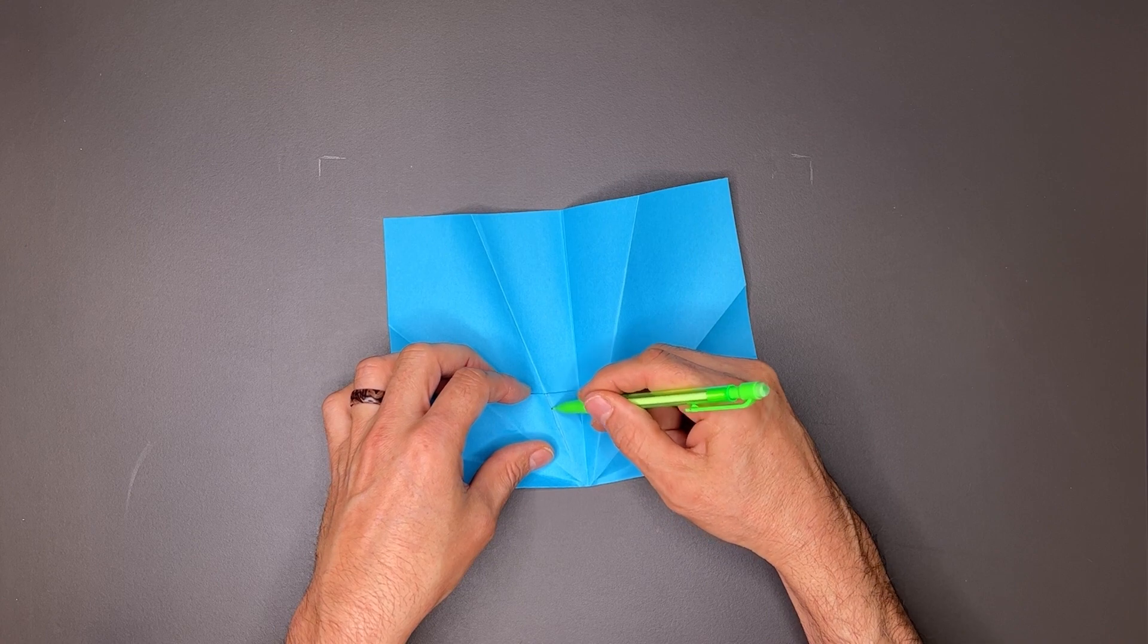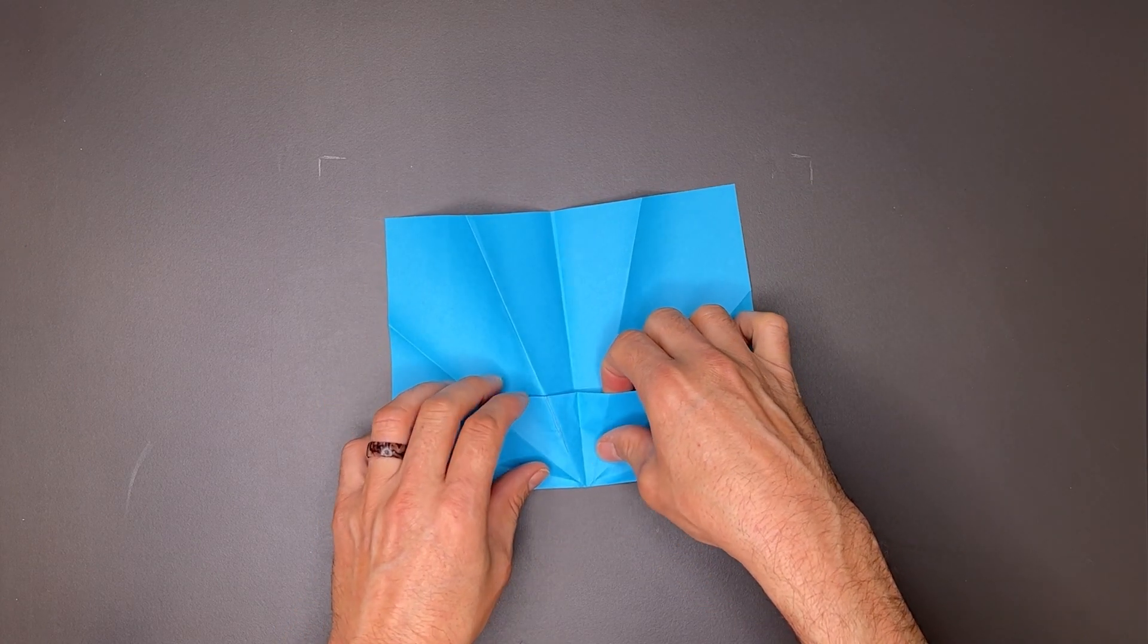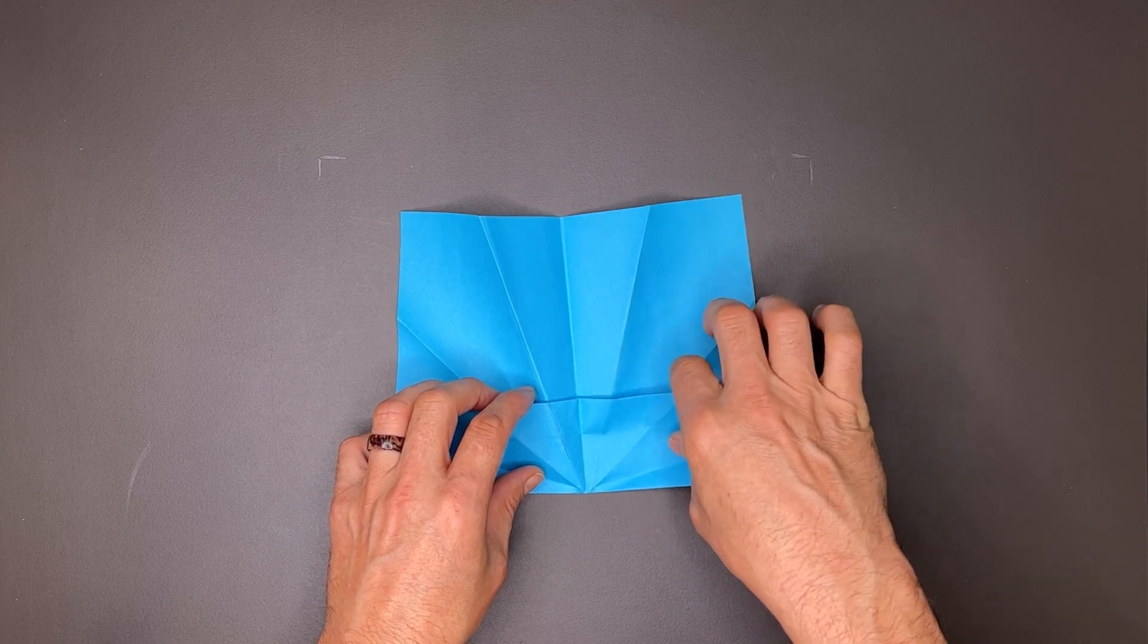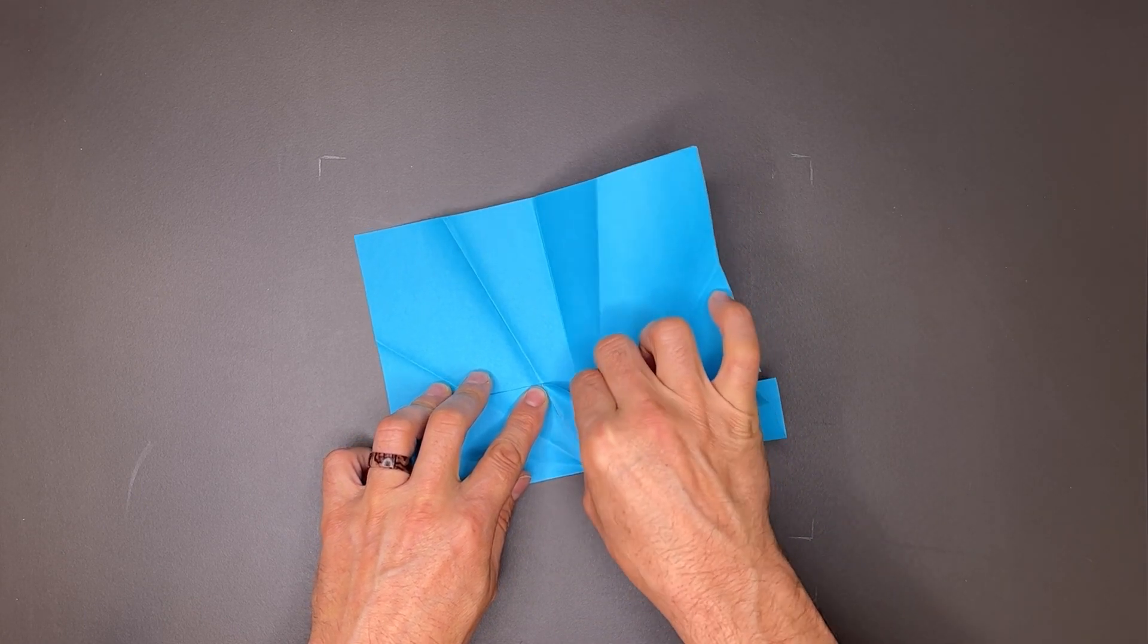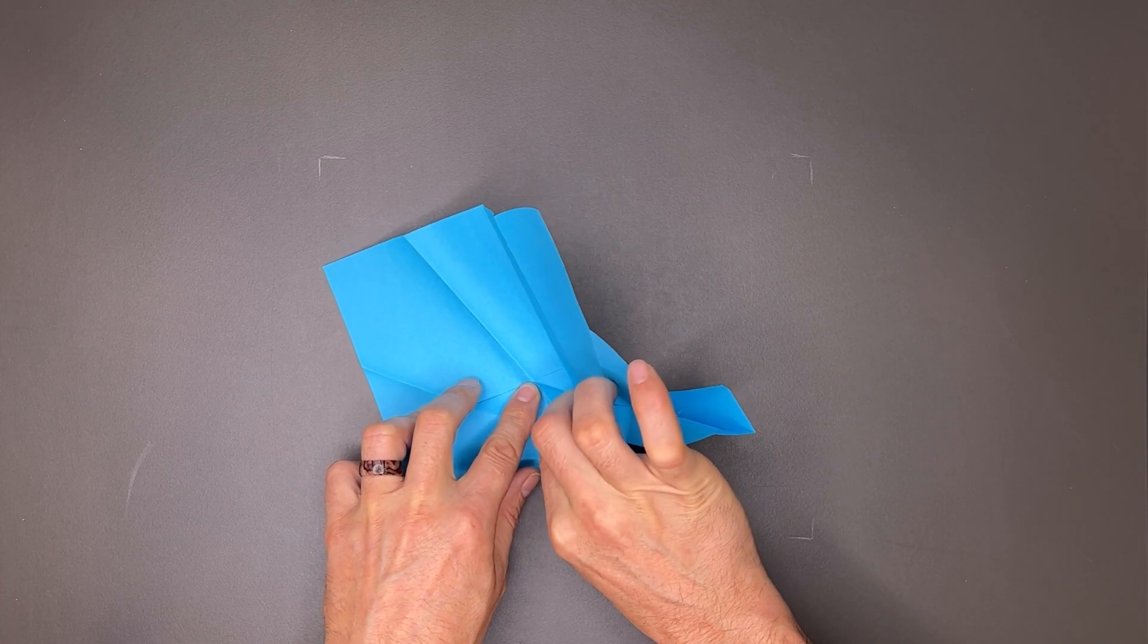You can see this crease right here, and I'll do that by opening this flap up, letting all these layers come loose, and I'm just going to pinch it and roll it back on itself just like this.